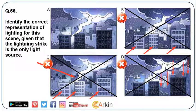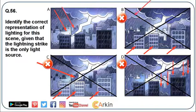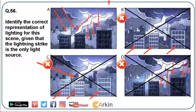Now observe option A. The center spot where the lightning is striking looks brightest. The second row of building surfaces looks bright due to reflected light from the front row of buildings. So option A is correct.